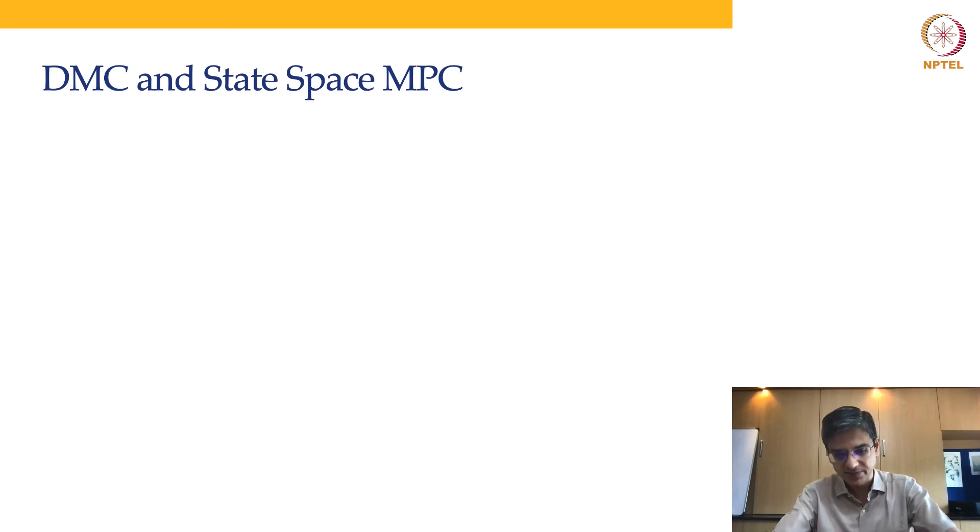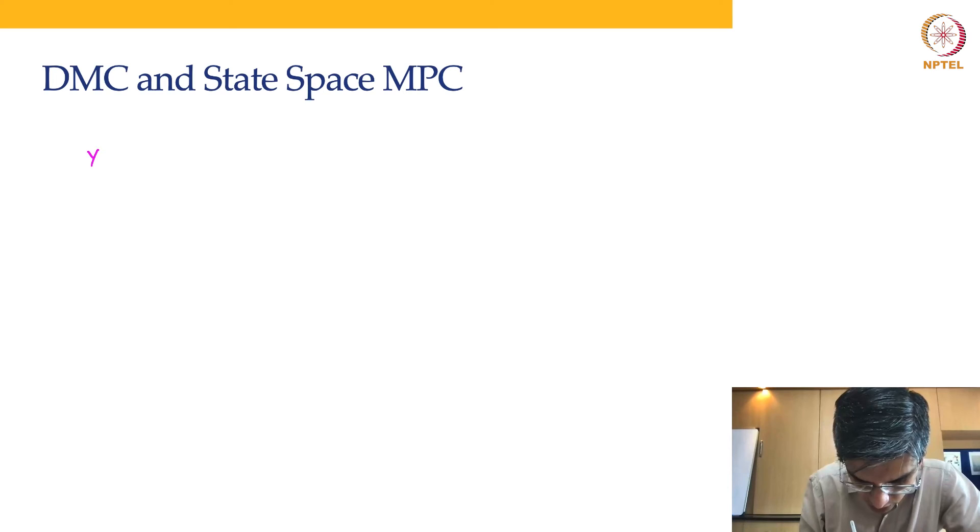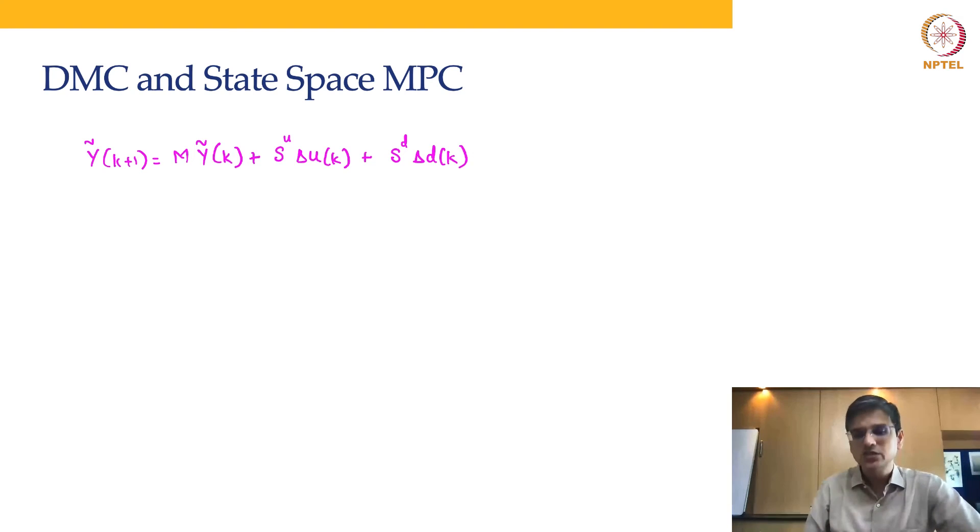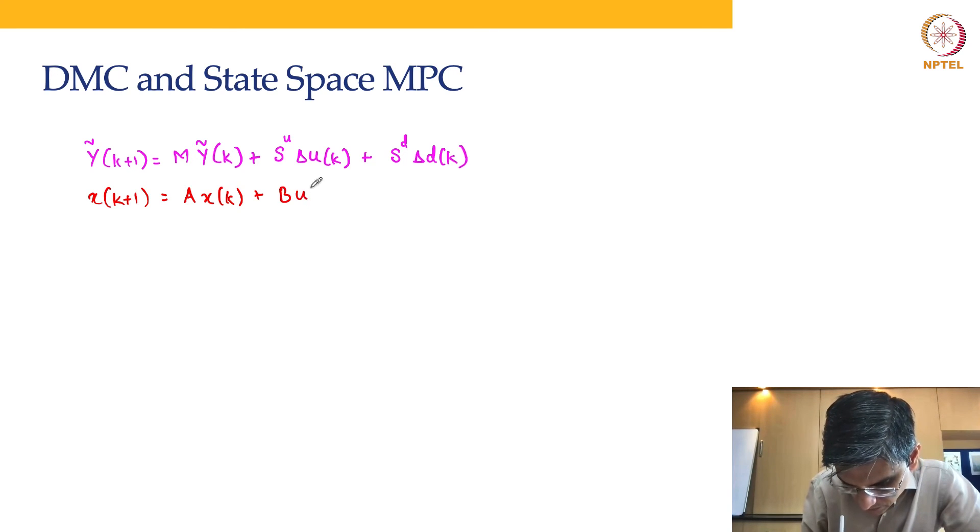First, in DMC you have the model of the form y(k+1) = ... This is the model you have in DMC, whereas the model we have in state space MPC is x(k+1) = A x(k) + B u(k). Then we talked about the rate-based formulation where you can difference it and augment it in order to make the state space form very similar to the DMC form as well. That was one part—this caters to the state definition.